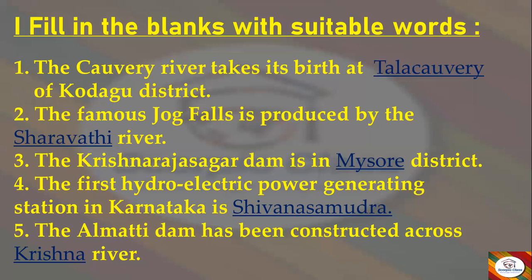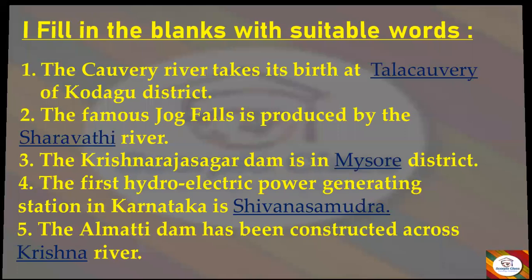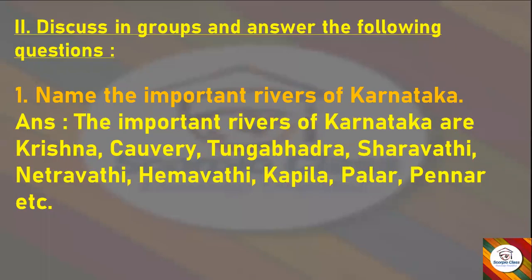Moving to the second main section — Question and Answers. First question: Name the important rivers of Karnataka. Answer: The important rivers of Karnataka are Krishna, Kaveri, Tungabhadra, Sharavati, Netravati, Hemavati, Kapila, Palar, Pennar, etc.